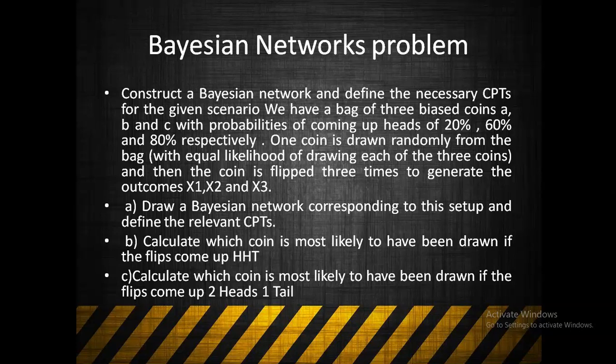If you take coin A and flip it, there is a 20% possibility of getting heads. Similarly, if you take coin B and flip it, there is a 60% possibility of getting heads. Similarly, if you flip coin C, there is an 80% possibility of getting heads. So the probabilities are 0.2, 0.6, and 0.8.